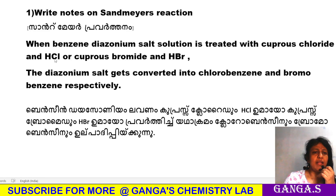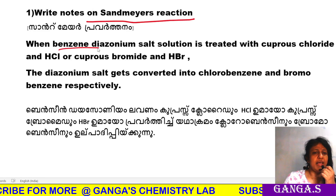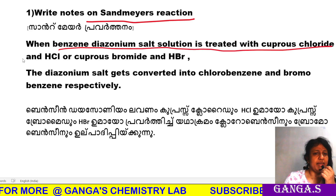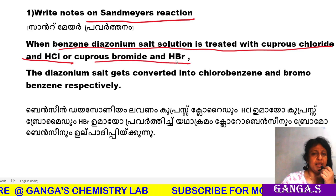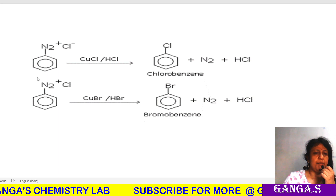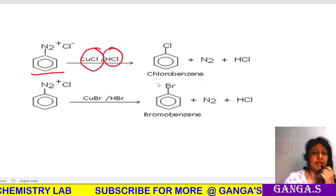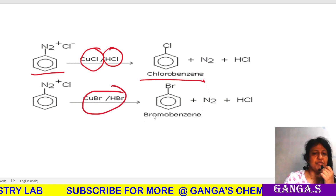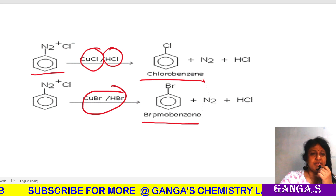We have a reaction called Sandmeyer's reaction. When benzene diazonium salt reacts with cuprous chloride and HCl, we get chlorobenzene. When we react with cuprous bromide and HCl, we get bromobenzene. This is a combination for making halobenzene, called Sandmeyer's reaction.